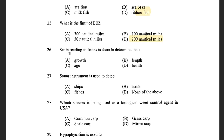Next question: Scale reading in fishes is done to determine their — options are growth, length, age, and health. The answer is age. Scales of the fish are observed for annular rings which determine the age of the fish, the same process we use in finding the age of a tree.